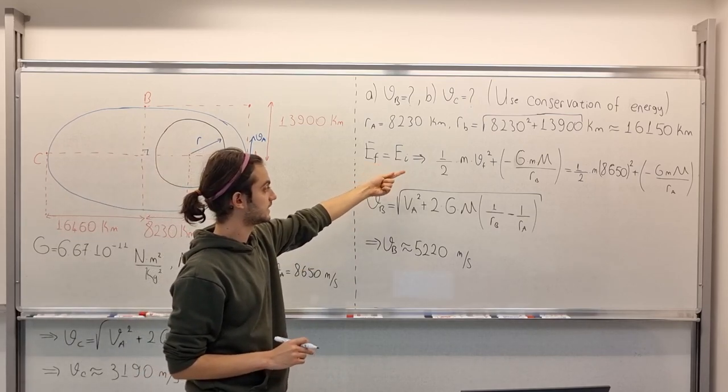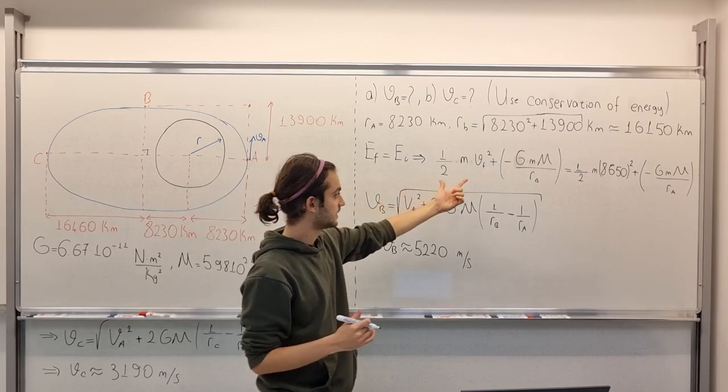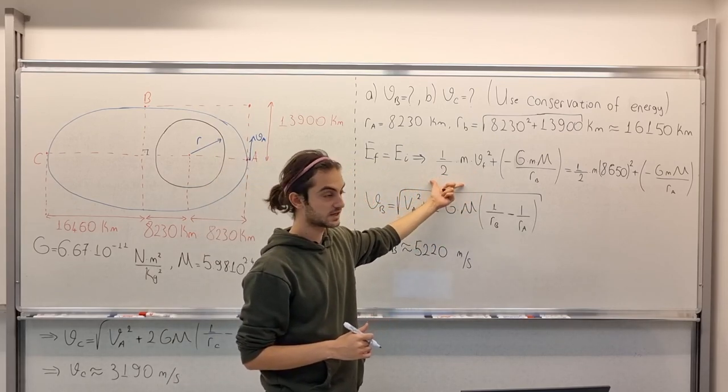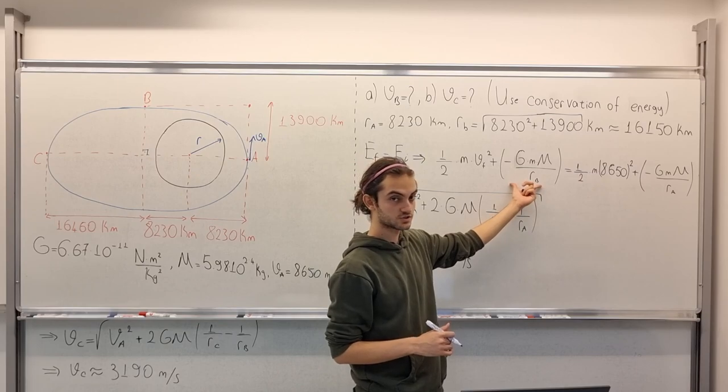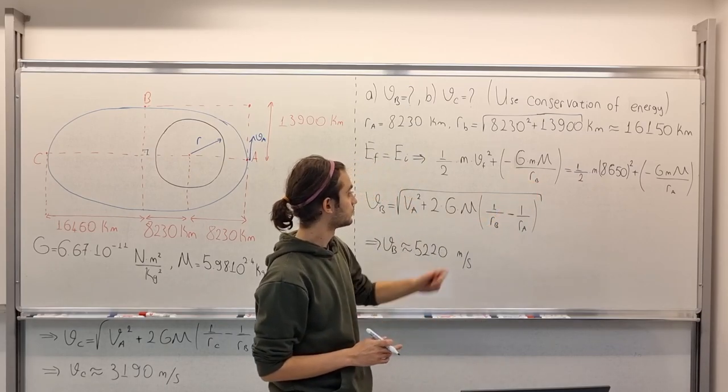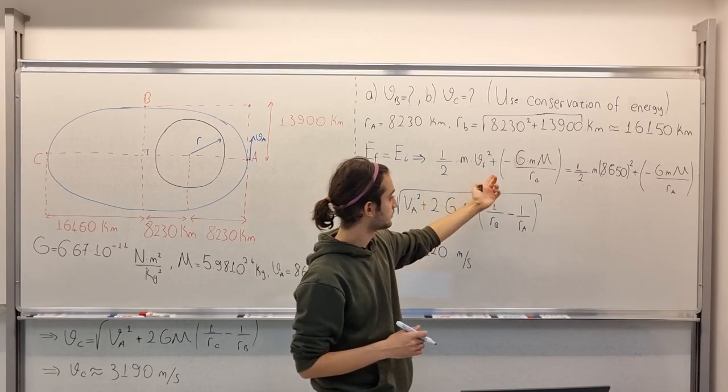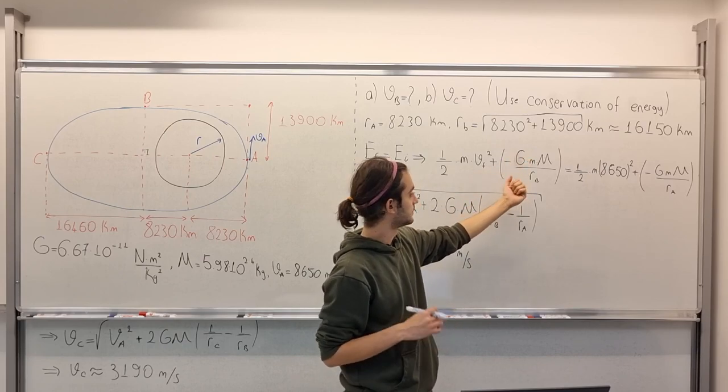So, E final equals E initial, all right, so then we have our formula, this is for kinetic energy, this is for potential energy, as you know. So, one half m VB squared, plus, in parentheses, minus G M m over RB.